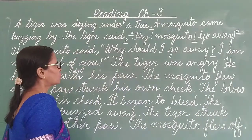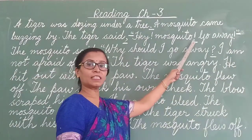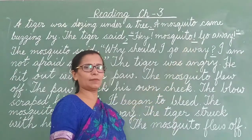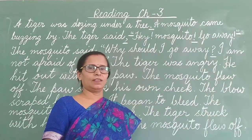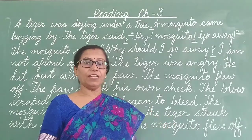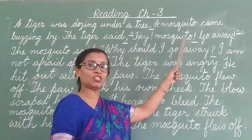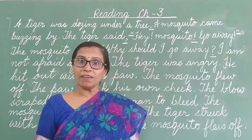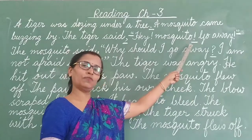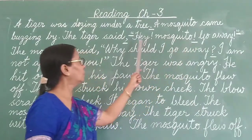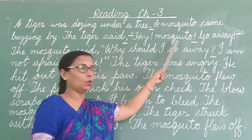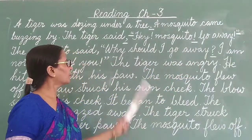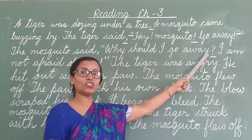And next is the exclamation mark. Where do we use it, and how should we read at an exclamation mark? When there is a strong feeling — when we express a strong feeling — or when we say something loudly, there we use an exclamation mark. For example: 'Hey! Mosquito! Go away!' There also we use an exclamation mark.